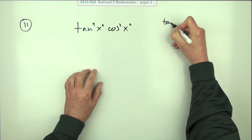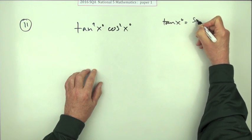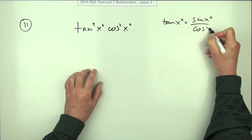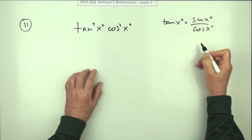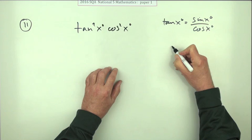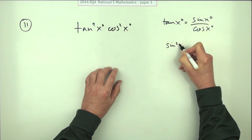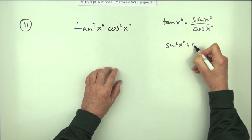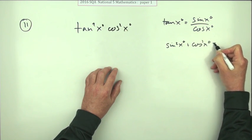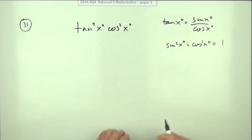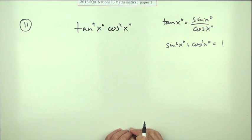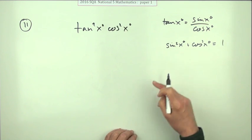The identities are: tangent of x equals sine x over cos x, and sine squared x plus cos squared x equals 1. Those are the only two you know so far, so you think: which of them would be useful in doing this?